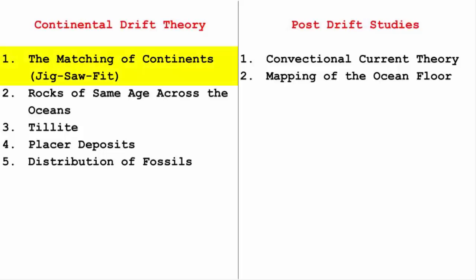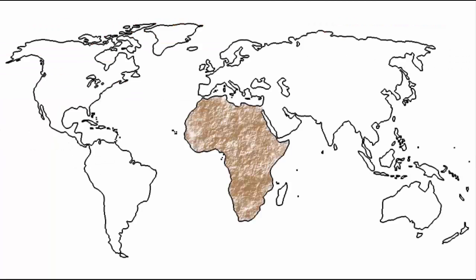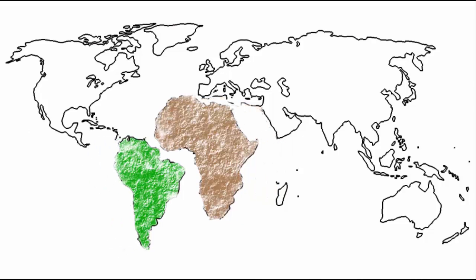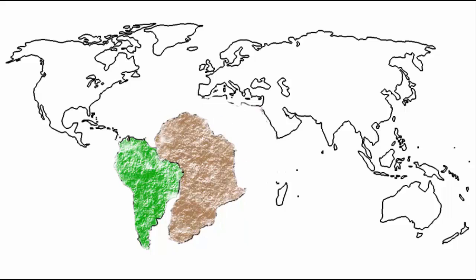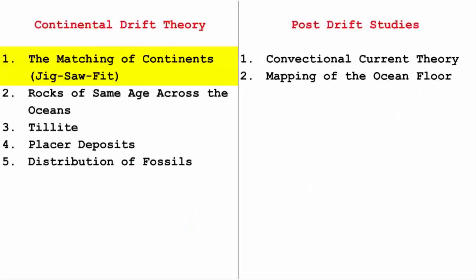The continental drift theory talks about the matching of continents. Wegener said if you look at South America and Africa, they look like a jigsaw puzzle fit when brought closer. Which is true — once upon a time both land masses were together — but the reason behind that is much deeper than just looking at the world map and saying they were once together.